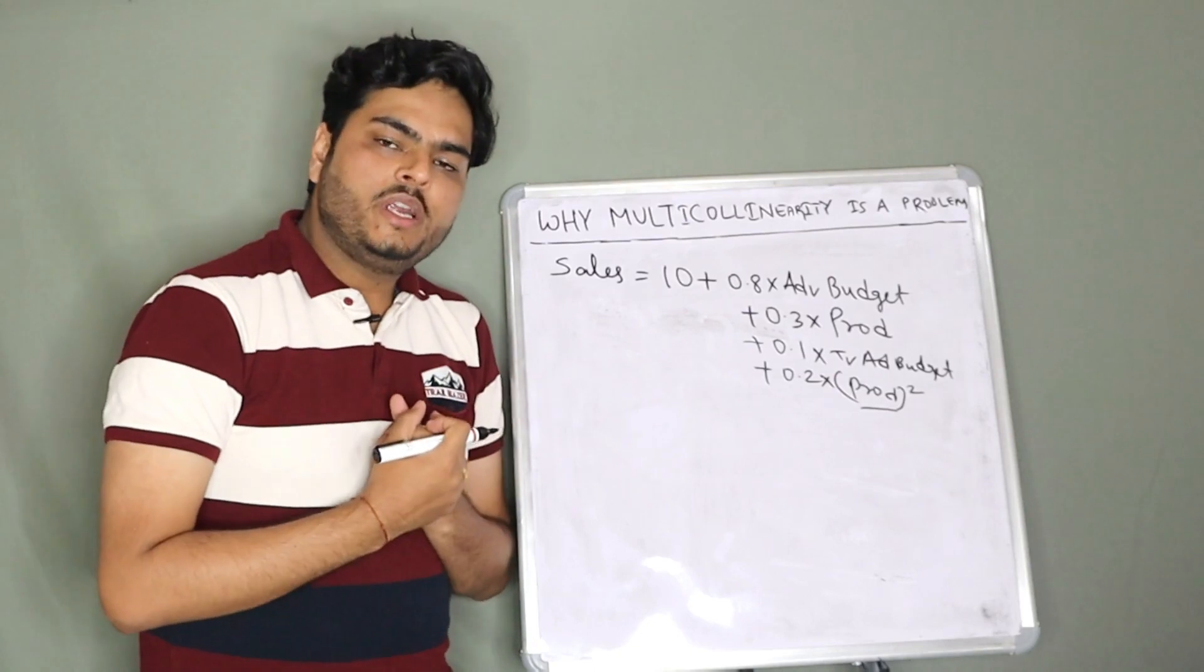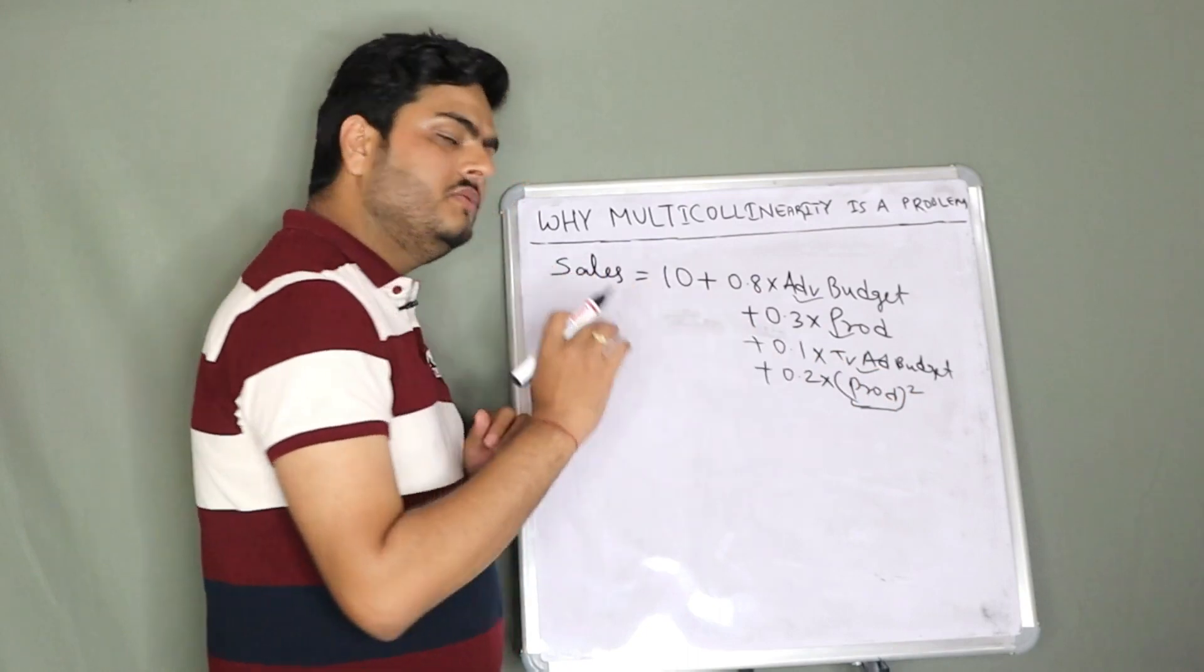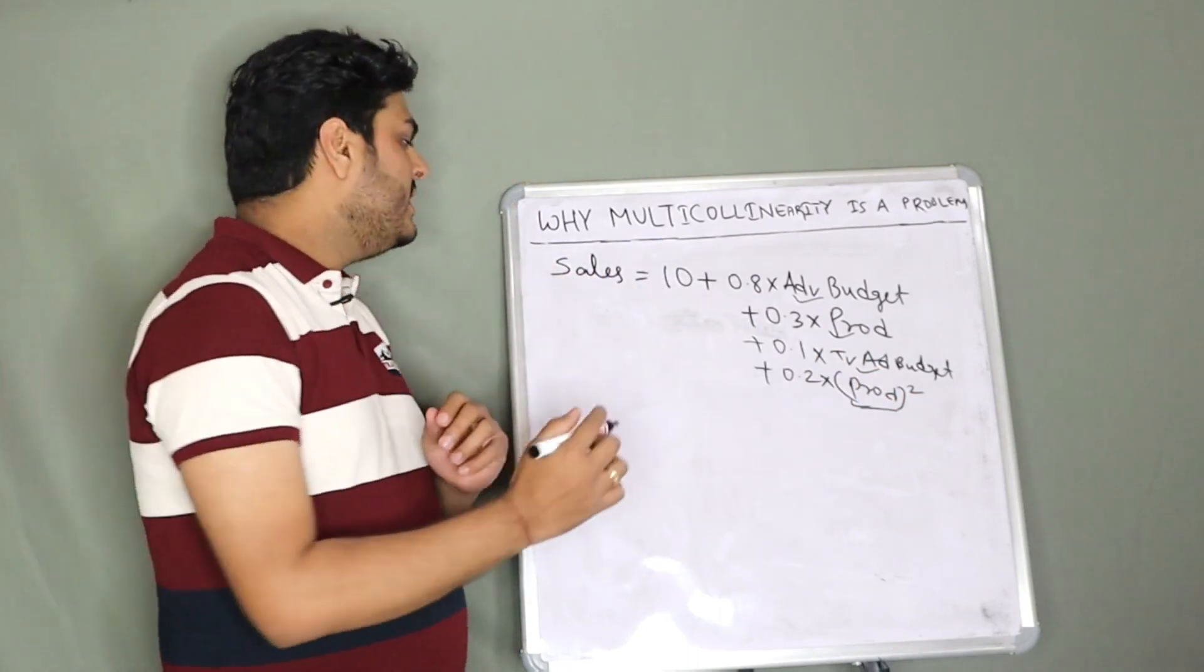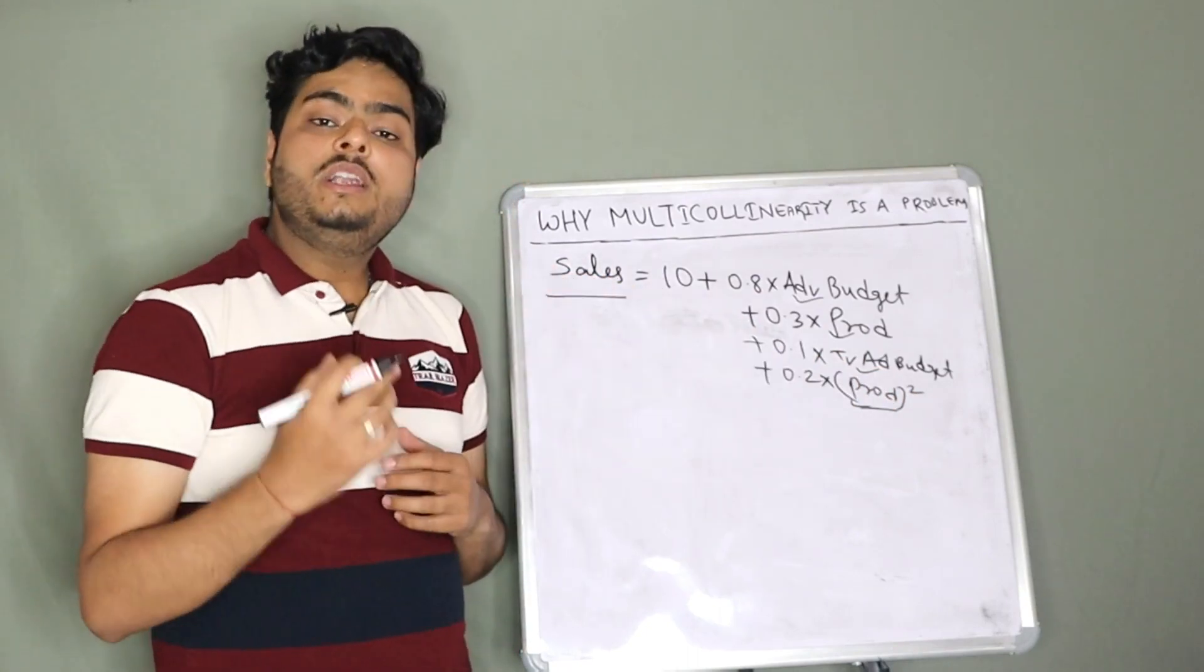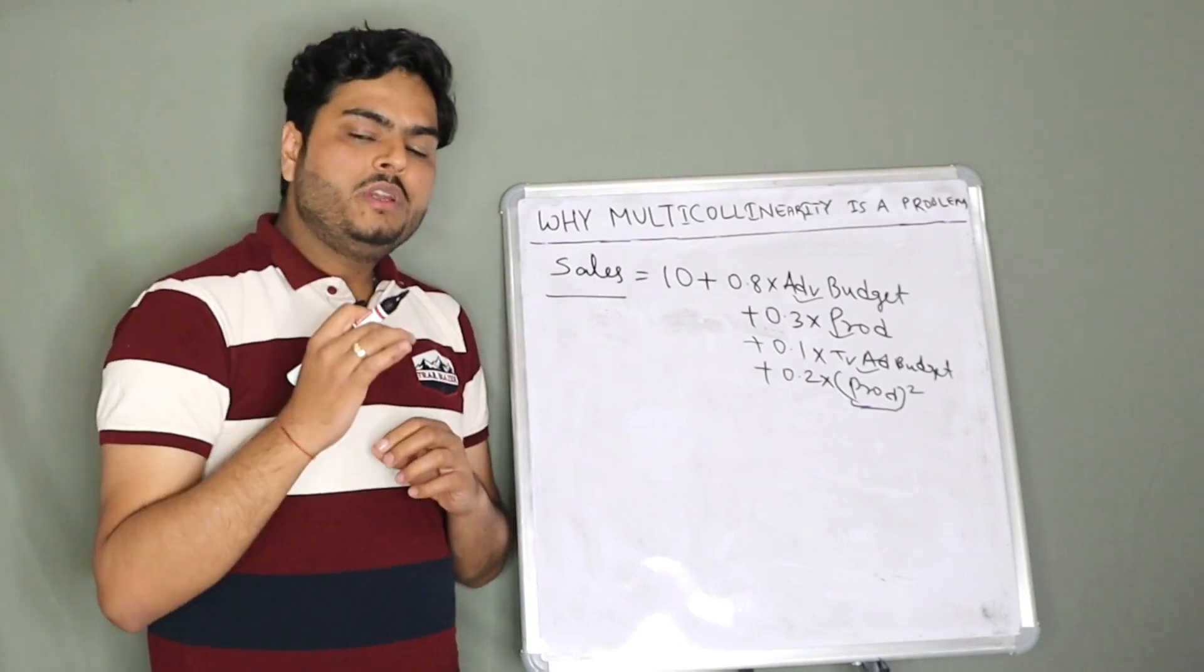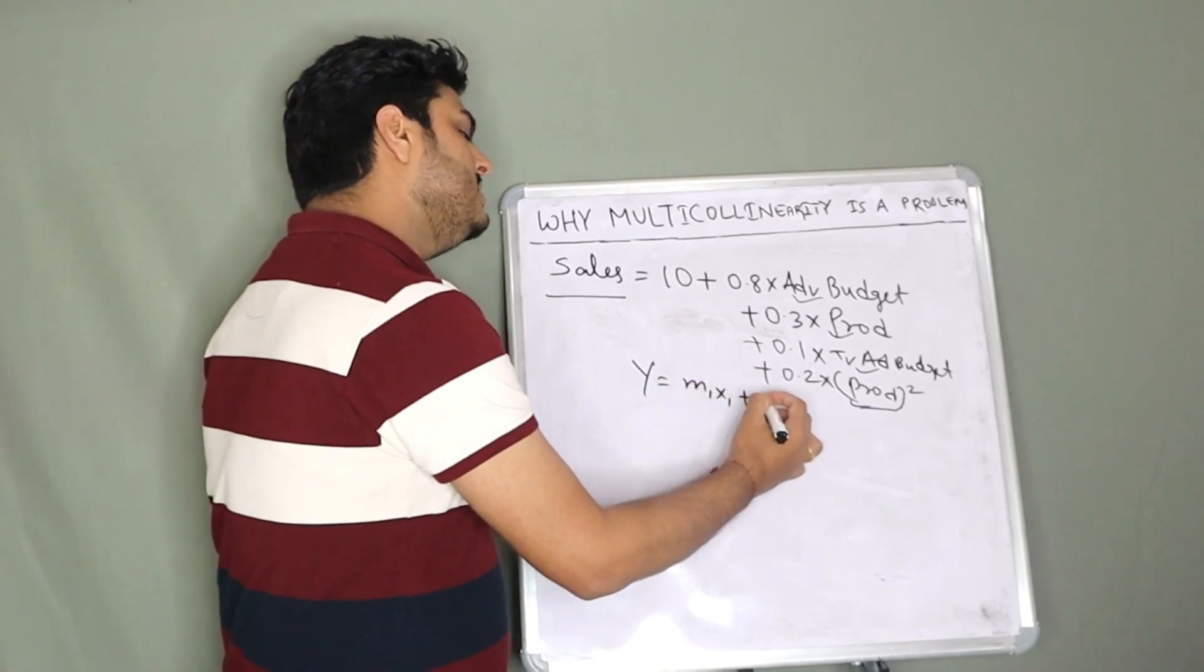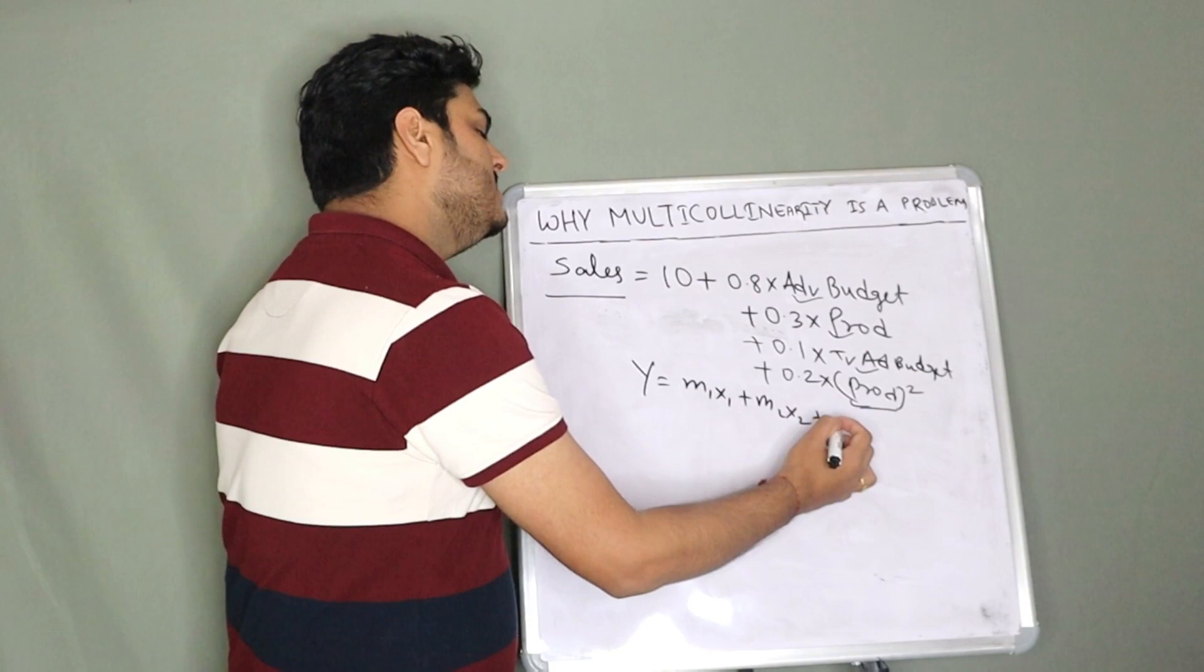We want to understand how each of these variables are impacting the target variable individually. This is very important. I will repeat it again: when you write y = m1x1 + m2x2 + c.